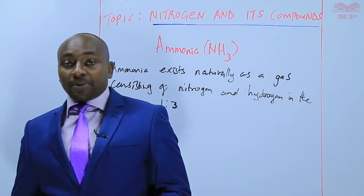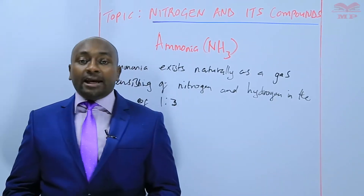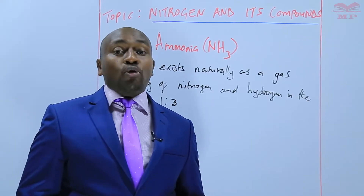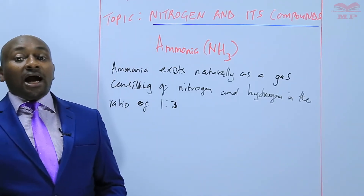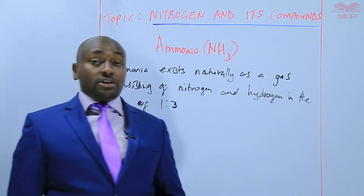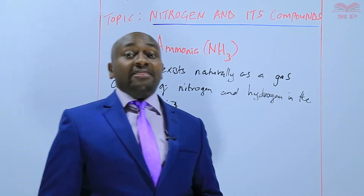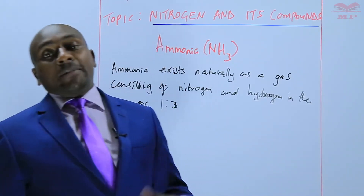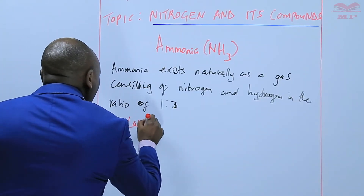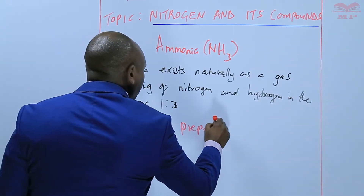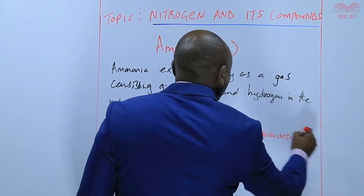The next thing we are going to look at is how ammonia gas is prepared in the laboratory — laboratory preparation of ammonia gas. Ammonia is prepared by a reaction between an ammonium salt and a strong base. Ammonia, being a weak base, is more volatile, meaning it vaporizes easily and can be displaced by less volatile bases such as sodium hydroxide, potassium hydroxide, and calcium hydroxide.